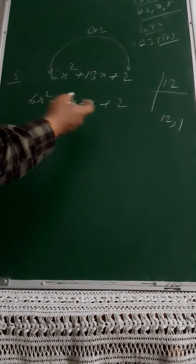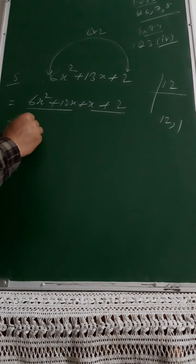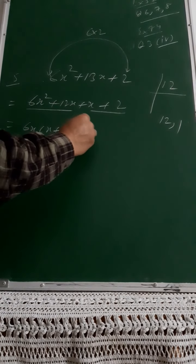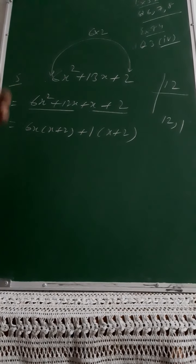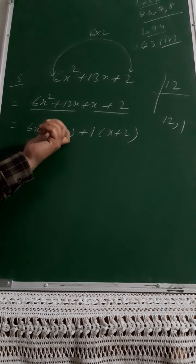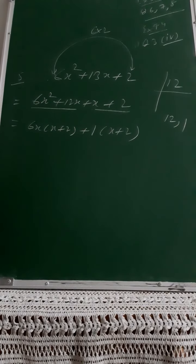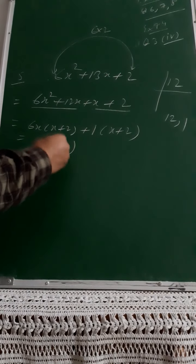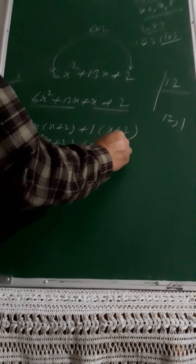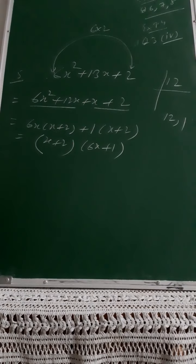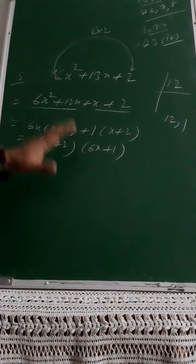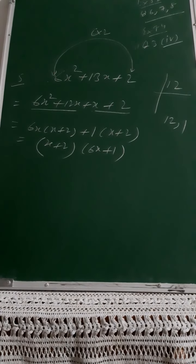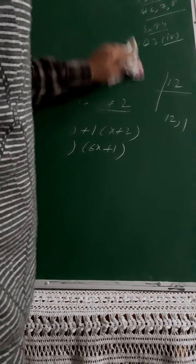The sum of 12 and 1 gives the middle term, both carrying the positive sign. Make the pair: first two and last two. In the first pair, 6x square plus 12x, take 6x common to get 6x(x plus 2). In the last two, take 1 common to get 1(x plus 2). Now take (x plus 2) common overall, leaving 6x plus 1. So the answer is (x plus 2)(6x plus 1). You can verify by multiplying the two binomials.